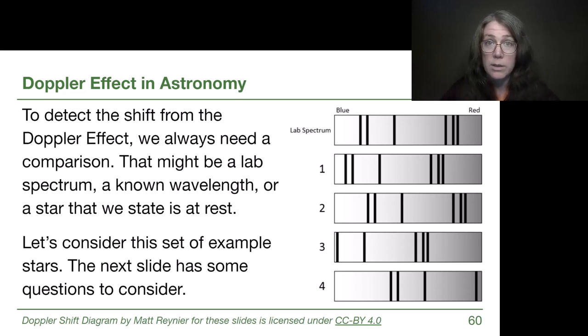All right, so when we are using this process to figure out that there is a shift, we always have to have a comparison. If I simply give you a set of lines in this class, you don't have enough information from me to know if that object is moving towards us or moving away from us or if it's moving fast or slow. You need to either compare two stars to know which one is moving more towards us or more away from us, or you have to compare to a known result, a lab spectrum like at the top of this set of options on the slide, or a known wavelength which we'll see in a slide or two, or a star that we state specifically we know is at rest.